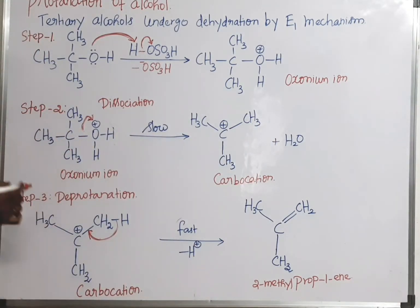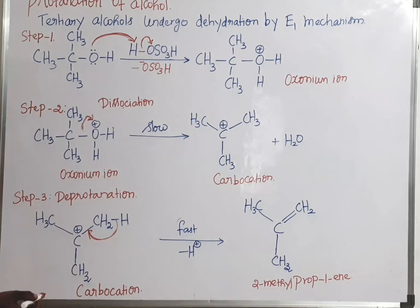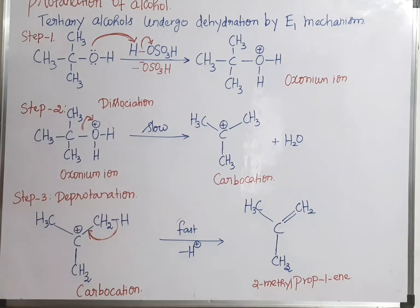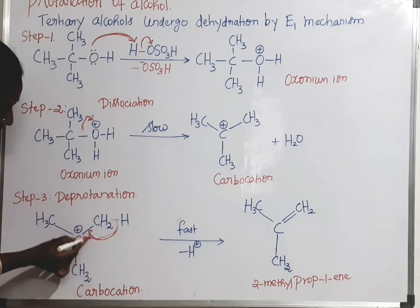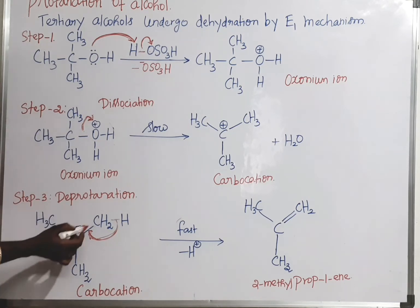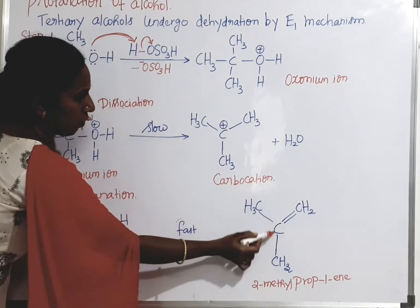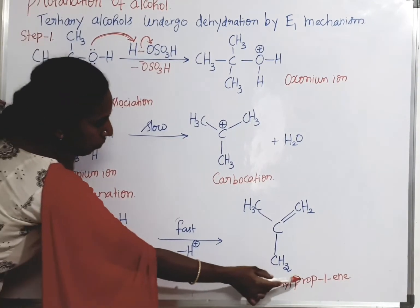The third step is the deprotonation — that is, minus H⁺ takes place. In the carbocation, the methyl group, which we write as CH₂–H, has this bond shift over. The carbon gets neutralized and there is a double bond formation. So an alkene is formed — the formula is 2-methylprop-1-ene.